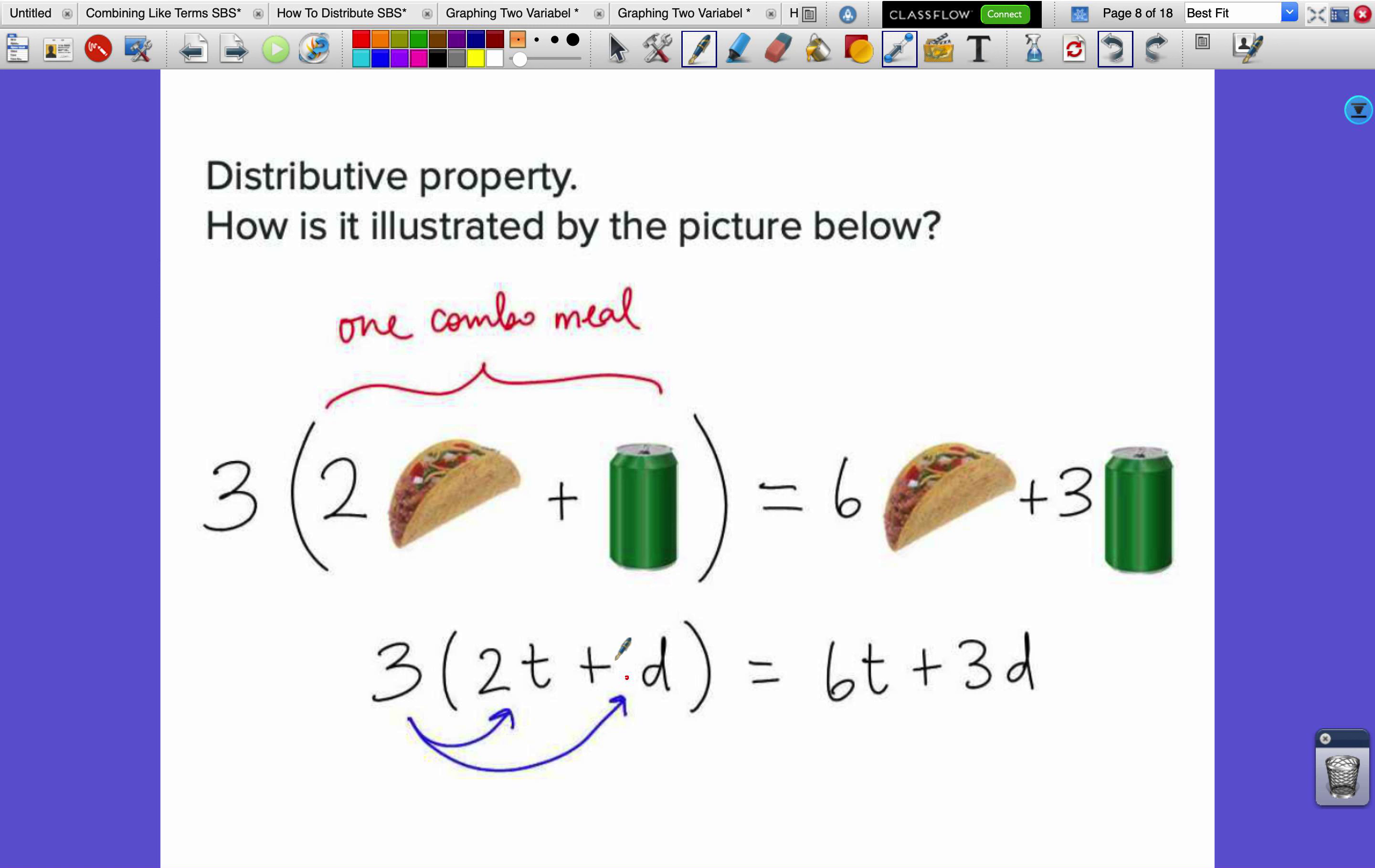If a family orders three combo meals, instead of getting two tacos, then going to the cooler to get a drink, then going back for two more tacos, just grab six tacos all at once, grab three drinks all at once. You're going to be done a lot quicker. We're using the distributive property to be a lot more efficient at our jobs.